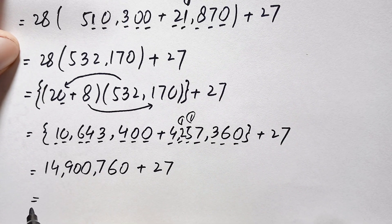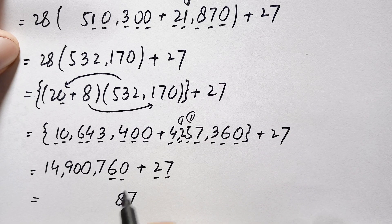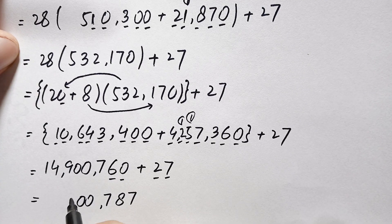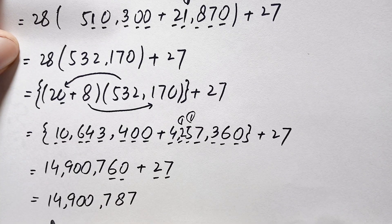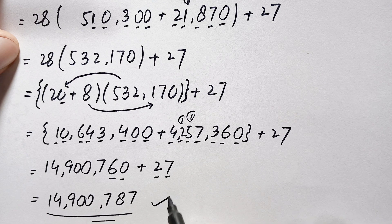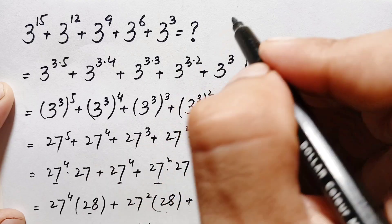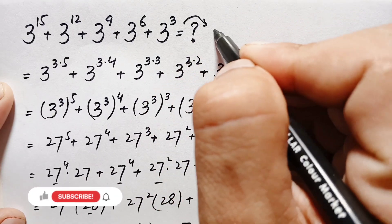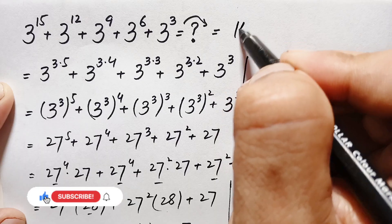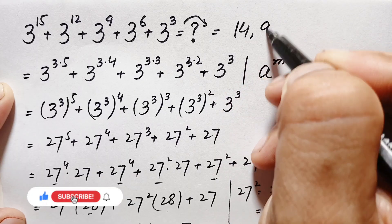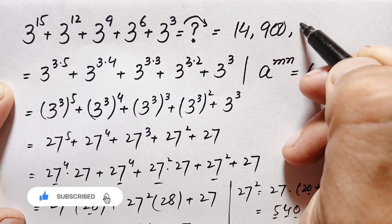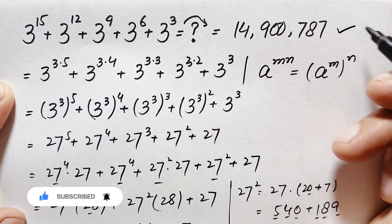Finally, adding 27: 14,900,760 plus 27 gives 14,900,787. So the final answer — the value of this interesting exponential math problem — is 14 million, nine hundred thousand, seven hundred and eighty-seven.